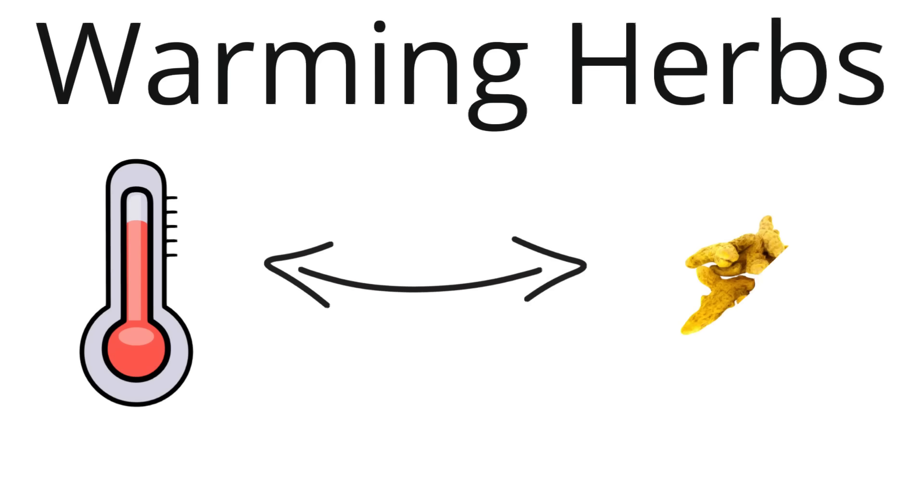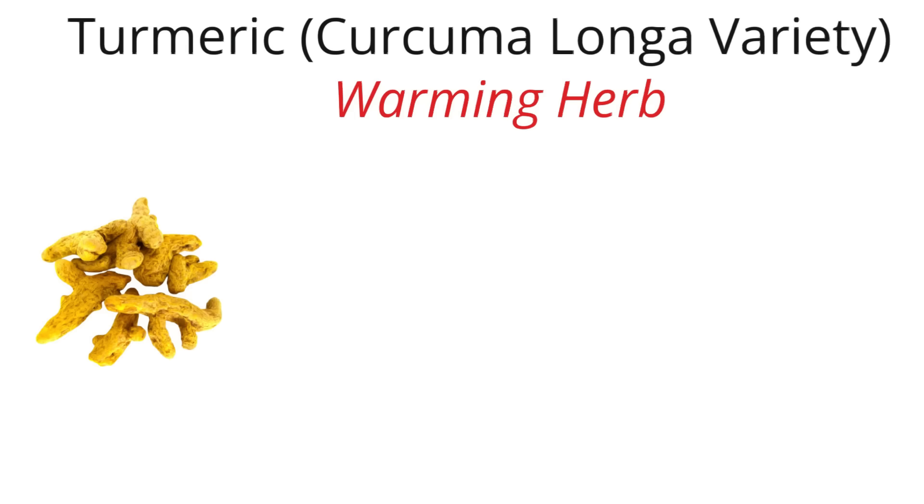A very popular warming herb is a variety of turmeric called Curcuma longa. This variety of turmeric is the one found on the market and considered a warm herb. It is also very moving due to the chemical curcumin that it contains.